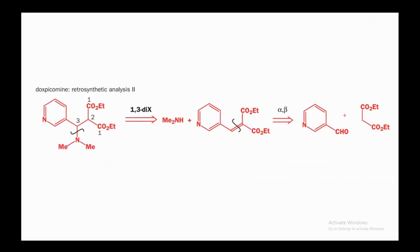Another 1,2,3-relationship example: disconnect at the appropriate position to get a positive charge equivalent to an alpha,beta-unsaturated compound; one side becomes aldehyde and the other is an active methylene (Michael) compound.